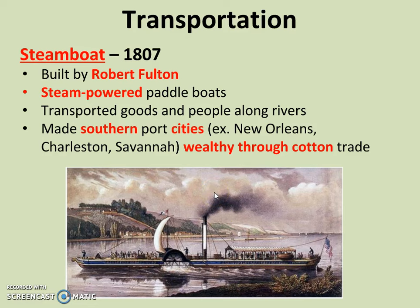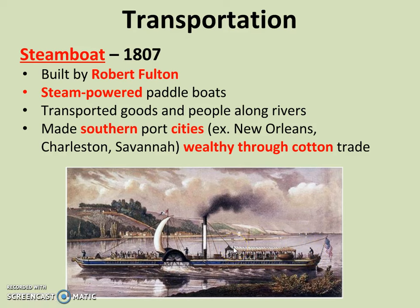Now we have transportation. The steamboat was invented in 1807, and Robert Fulton is generally credited as its inventor, though other inventors were also working on it at the time. The steamboat was a steam-powered paddleboat used to transport goods and people along rivers. Steamboats could move faster and also travel up river, unlike traditional boats. This made southern port cities — New Orleans, Charleston, and Savannah — very wealthy through their cotton trade. The invention of the cotton gin and the steamboat at about the same time resulted in an economic boom through cotton for the South.